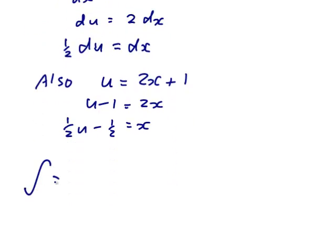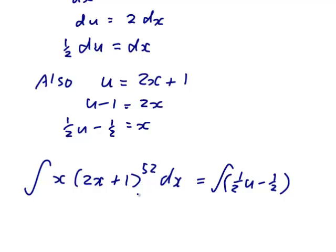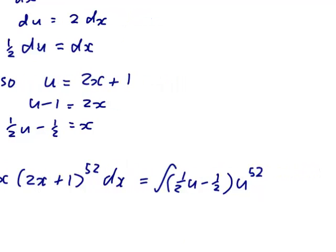We had the integral of x times 2x plus 1 to the 52 dx. Now the x is a half of u minus a half. And the 2x plus 1 to the 52 would be u to the 52. And the dx is a half of du.